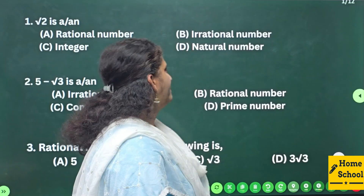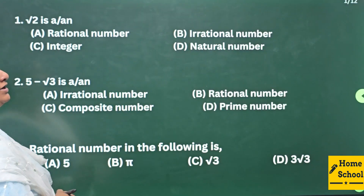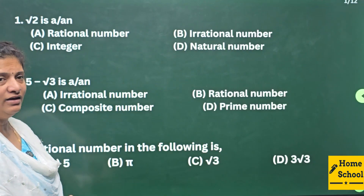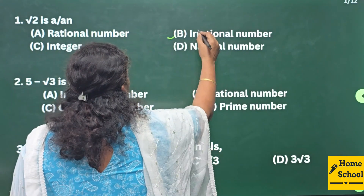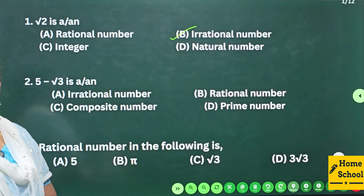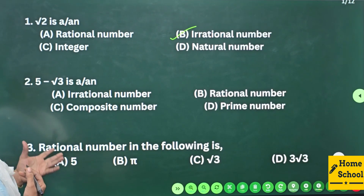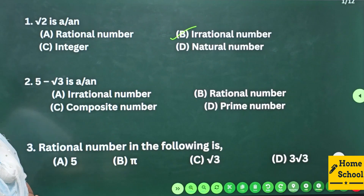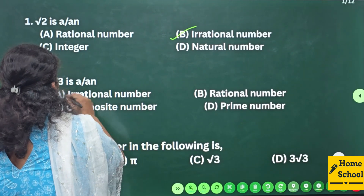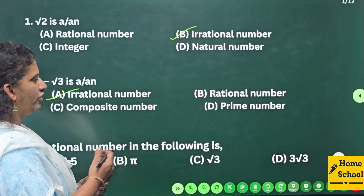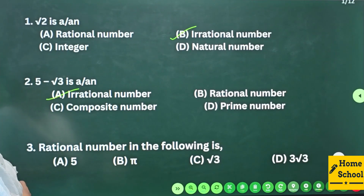Question 1: √2 is a or an — what is √2? √2 is an irrational number. Question 2: 5 minus √3 is a or an — what type of number is it? 5 minus √3 is also an irrational number. Question 3: Which is a rational number in the following?